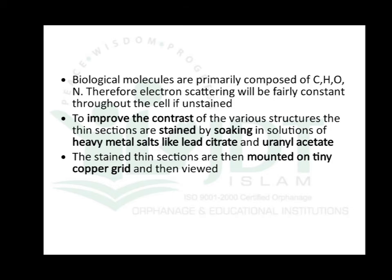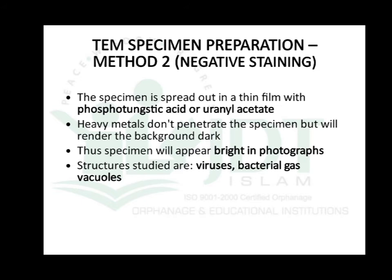The second method is negative staining. The specimen is spread out in a thin film with phosphotungstic acid or uranium acetate. The heavy metal does not penetrate into the cell or specimen but renders the background dark, so the specimen appears bright in the electron micrograph. This method is used for studying viruses and bacterial gas vacuoles.